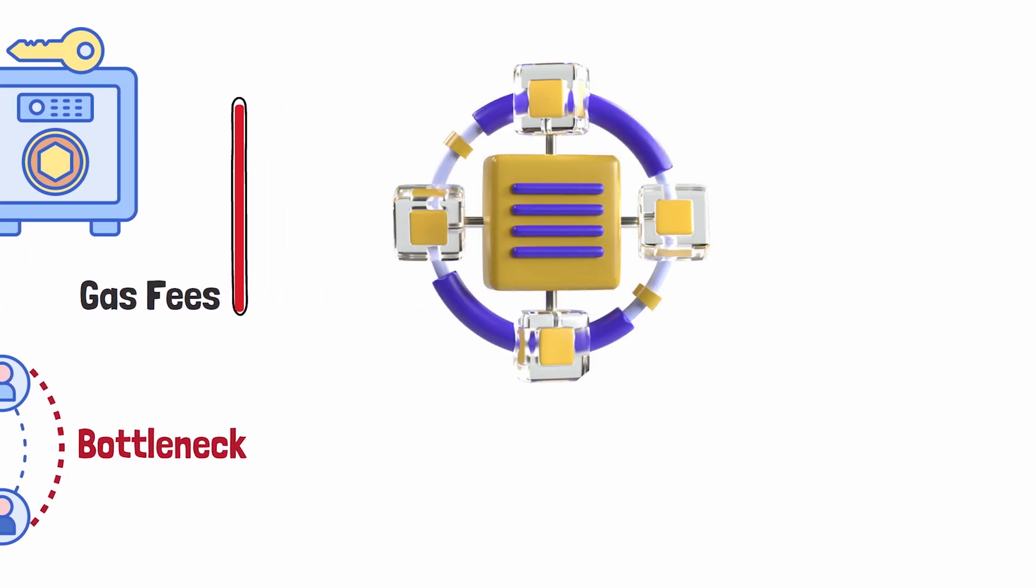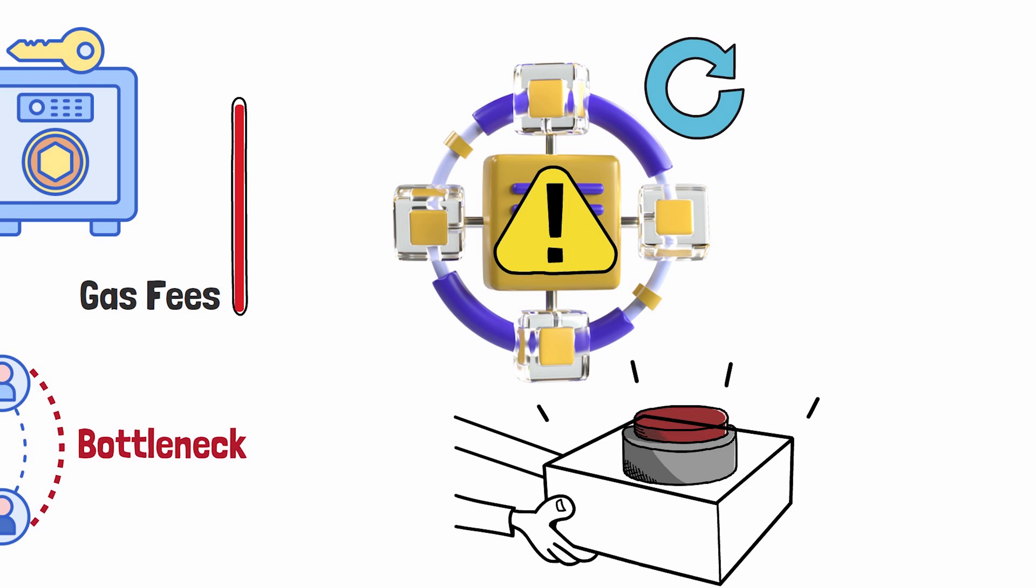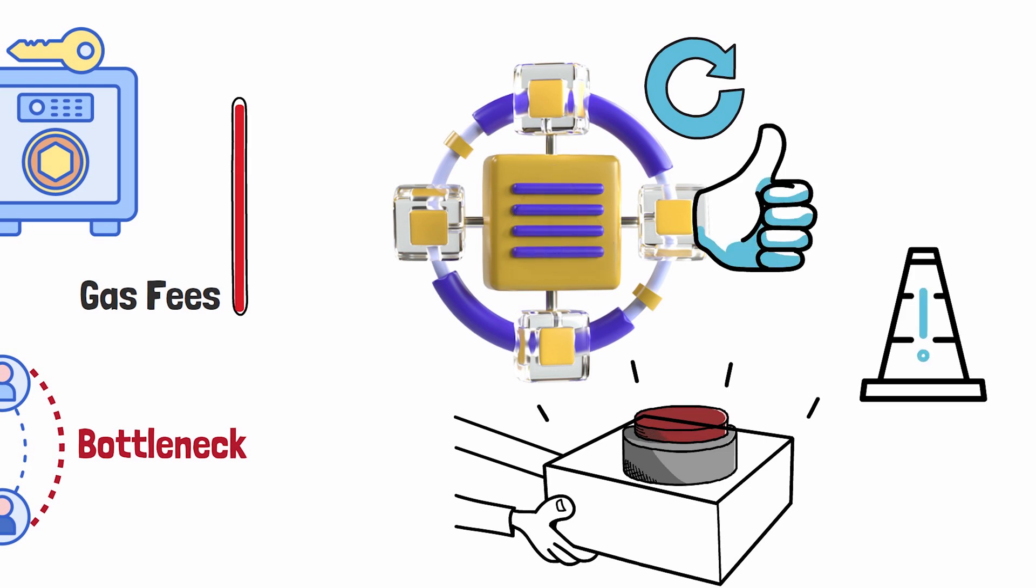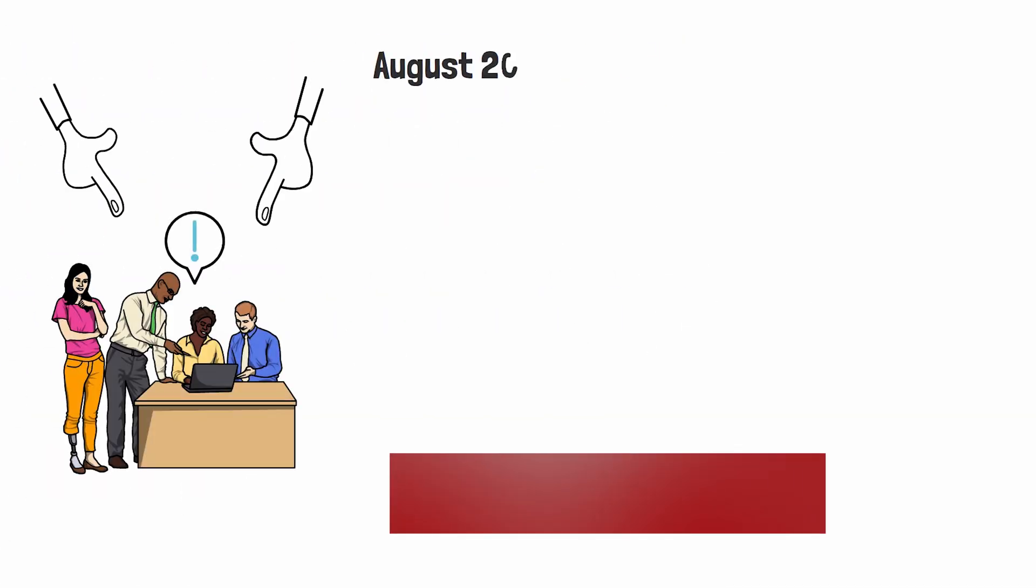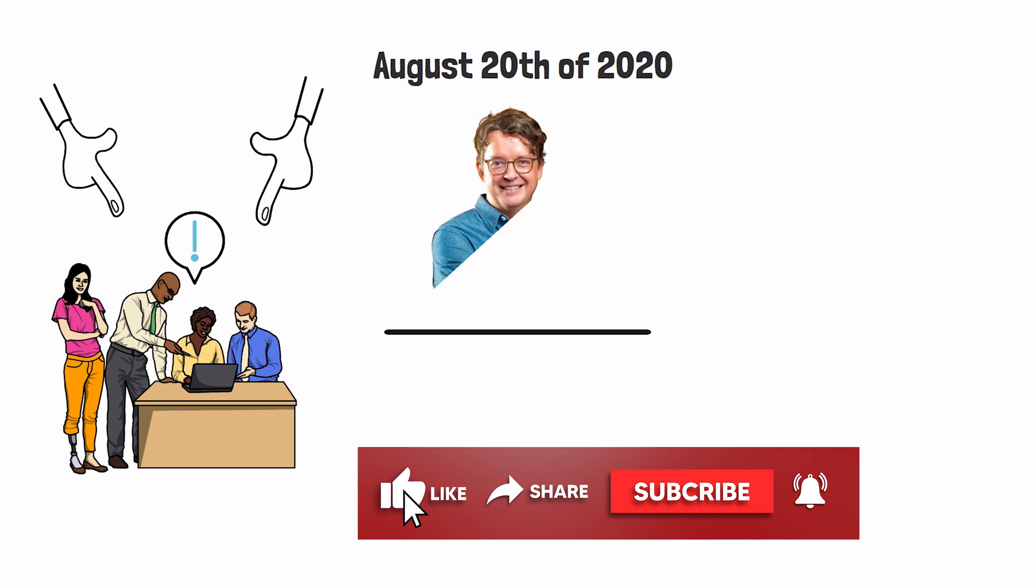The network starts getting congested, gas fees start to skyrocket, bottlenecks start to happen, and some famous layer one blockchains have been breaking so often it seems like it happens every other week. It's almost like they have a built-in reset switch - every time there's an issue, they just reset the blockchain and act like nothing happened.